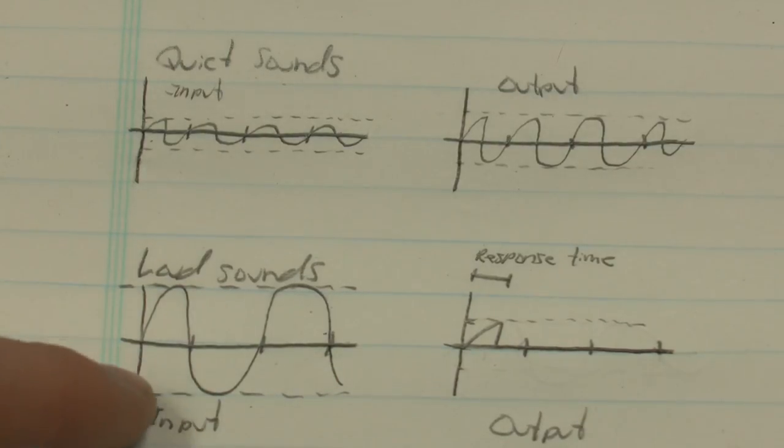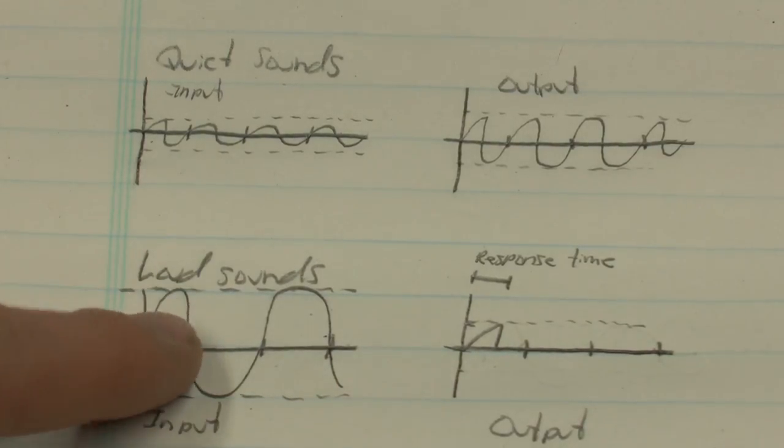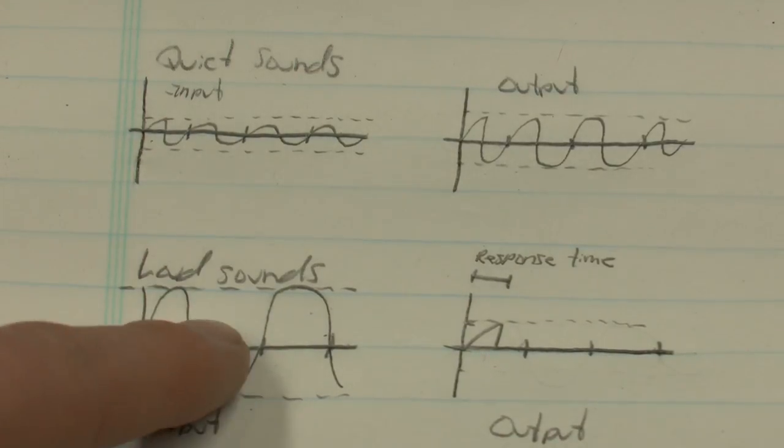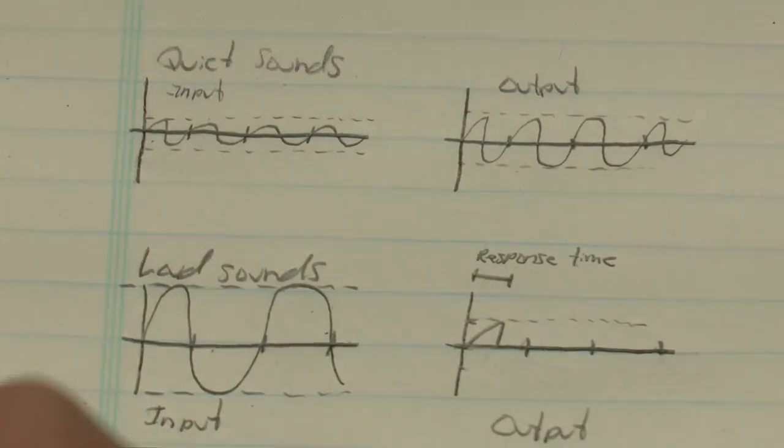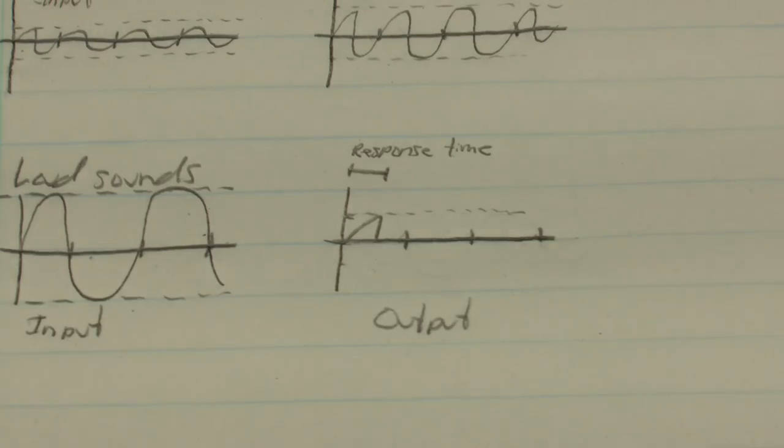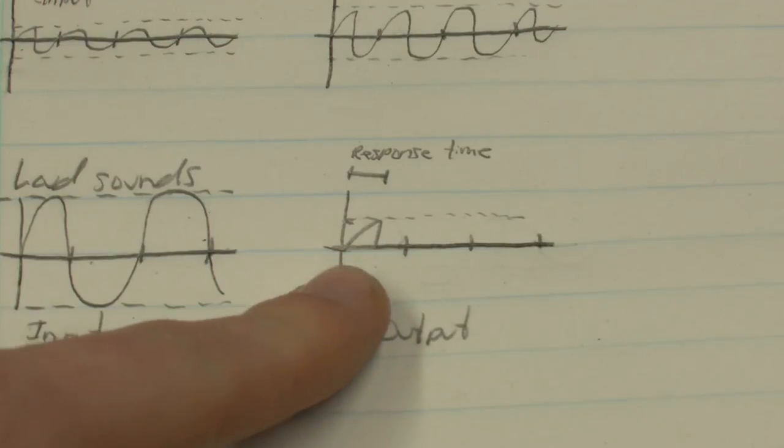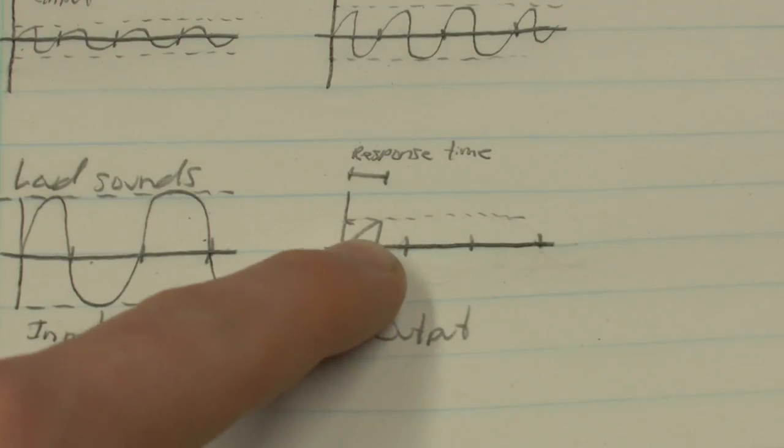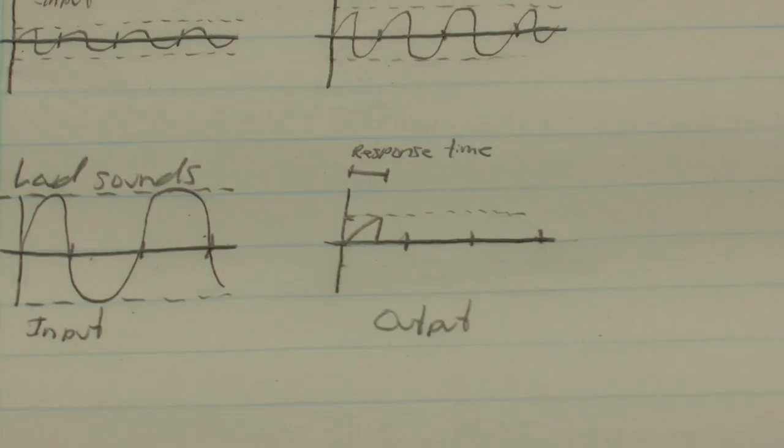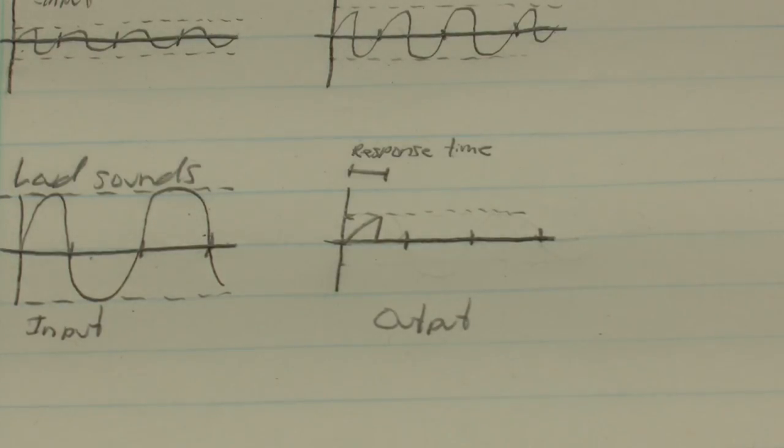Now when you get to the louder sounds, as you can see, the peaks on this are much higher than before, indicating louder sounds. When that computer detects the loud sound, it turns the volume to zero. Now, you might be wondering, if it turns it to zero, what is this here? And what that is is the response time. It takes a little bit of time, usually 10 or 15 milliseconds, for the electronics to detect that there's a loud sound and to turn the volume to zero.